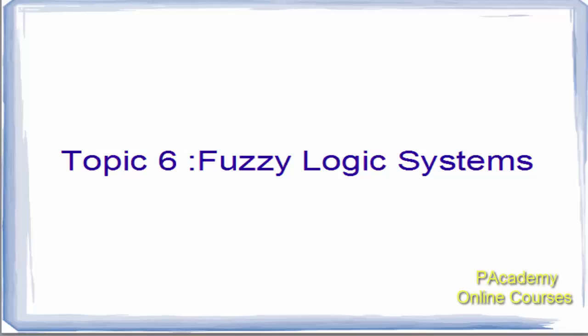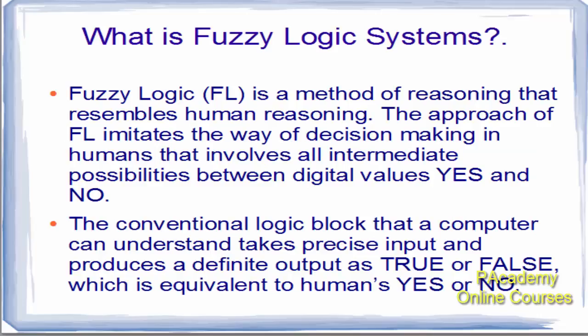Welcome to topic six. In this video I'll explain fuzzy logic systems. Fuzzy logic, known as FL, is a method of reasoning that resembles human reasoning. The approach of FL imitates the way of decision making in humans that involves all intermediate possibilities between digital values yes and no. When a human brain thinks, it not only thinks between the value of yes or no, but also the possible values in between.